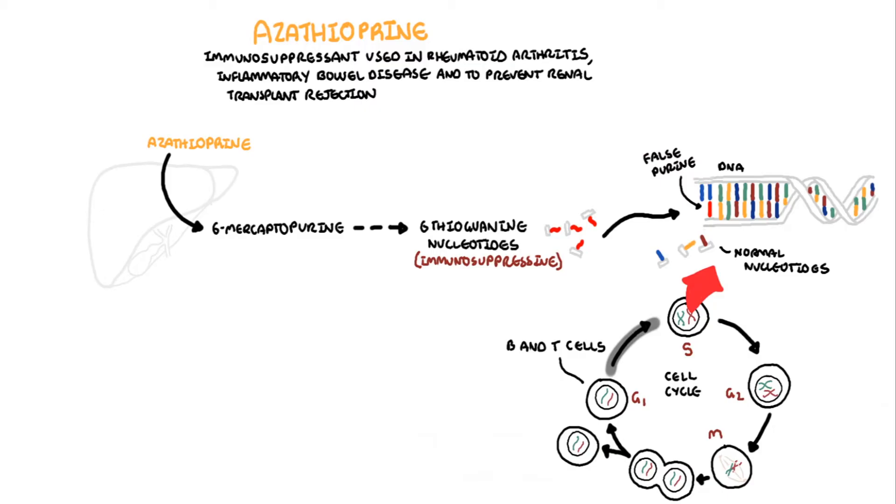When 6-thioguanine incorporates into the DNA, this results in a mutation that would stop the cell cycle, promoting repair or apoptosis.